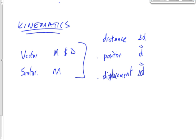Distance is how far something has gone. If I walk 10 meters this way or 10 meters that way, my distance traveled is 10 meters. It doesn't matter which way I went, because distance is a scalar — it just matters that I traveled 10 meters.